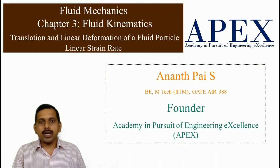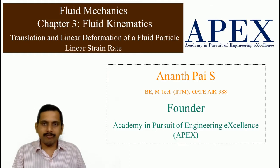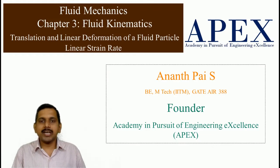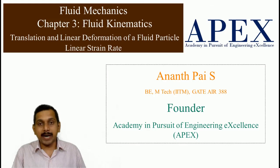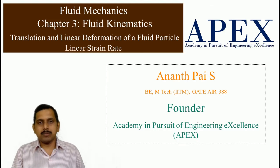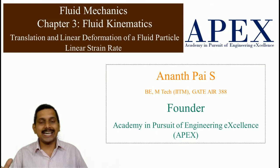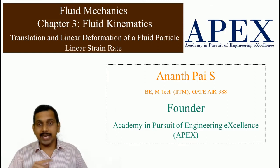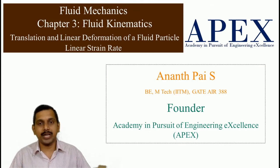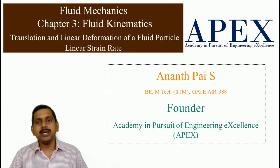When we talk about deformation, there can be two types: shear deformation and linear deformation. Shear deformation is when the included angle in a particle changes. Whereas linear deformation is like having a compressive or tensile strain — its length changing in a perpendicular direction — while the included angle inside a fluid element remains the same. That is called linear deformation.